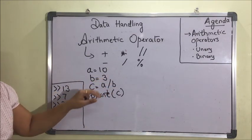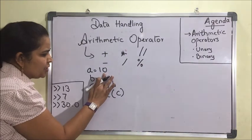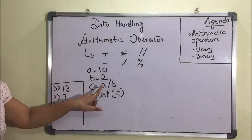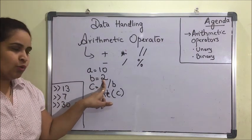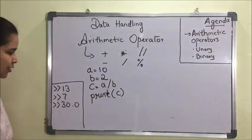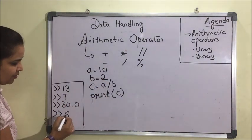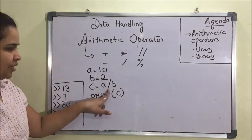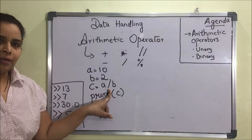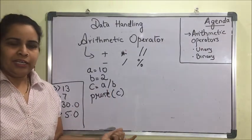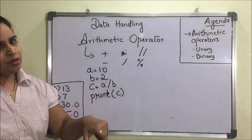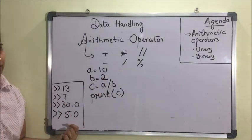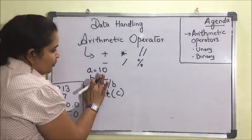But in the case of division, even if we divide an integer by an integer — for example, 10 divided by 2 equals 5 — the result will still be 5.0, not 5. Division always returns a float number whether we are using integer operands or not. In both cases the output will be a float value.